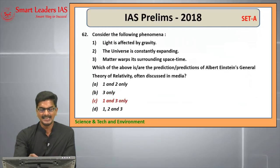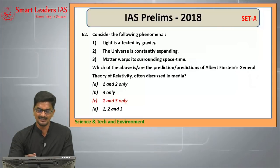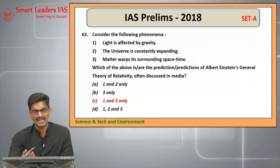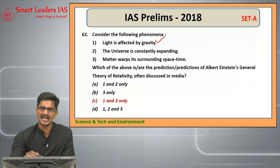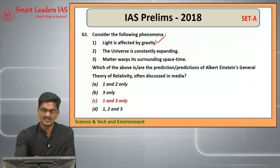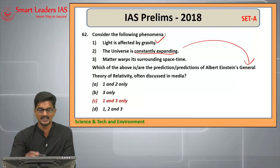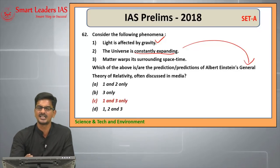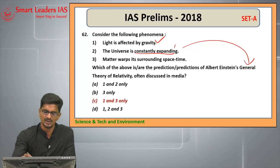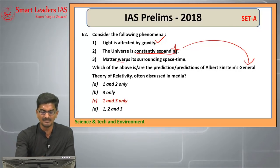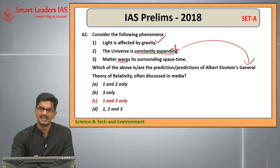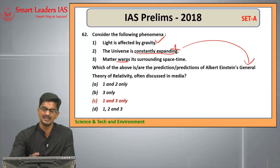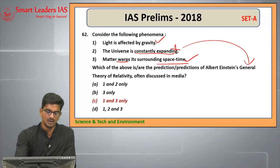Question 62: Light is affected by gravity — gravity can bend light, which is why light cannot escape black holes. First statement is correct. The second statement — that the universe is constantly expanding — is wrong because the universe is undergoing accelerated expansion due to dark matter and dark energy, not constant uniform expansion, and this is not directly related to Einstein's theory of relativity. Third statement — that matter warps surrounding space-time, generating gravity, which in turn bends space and time — is correct. Answer: 1 and 3.